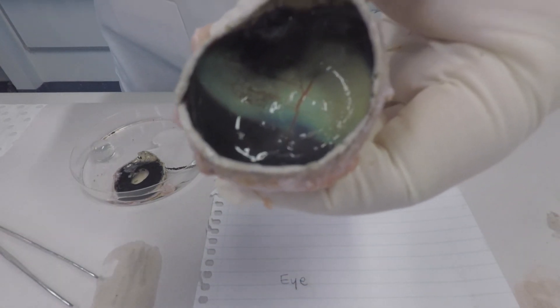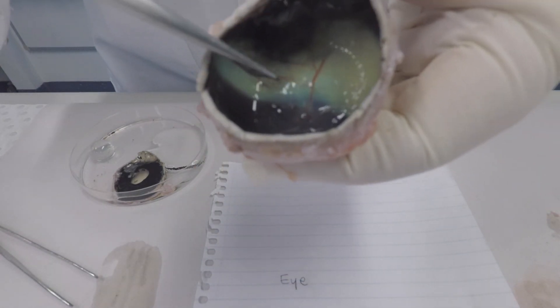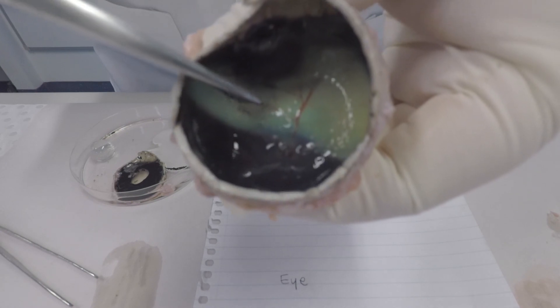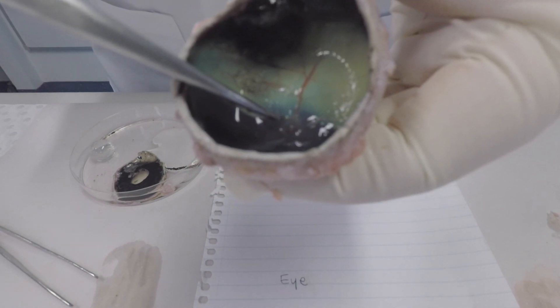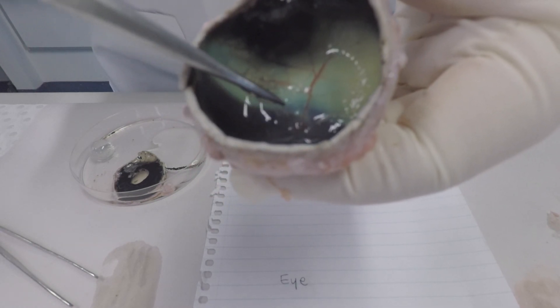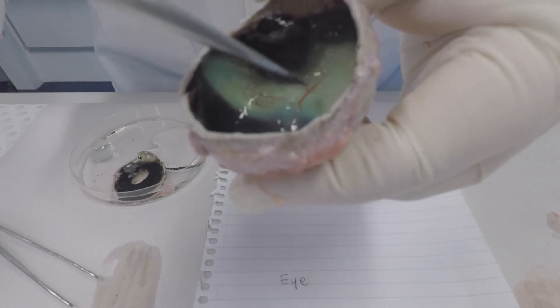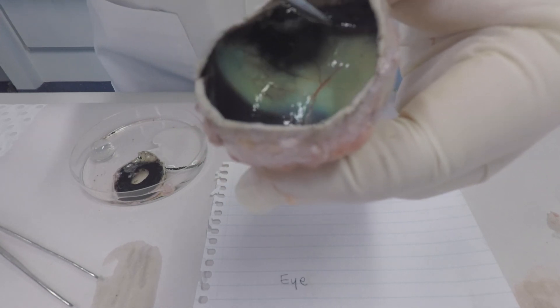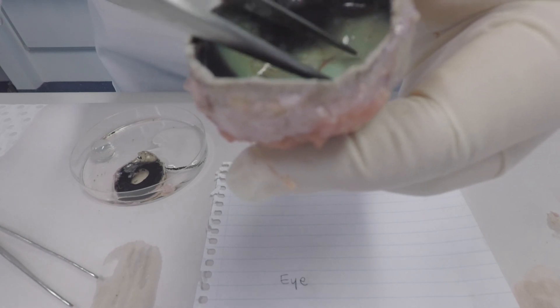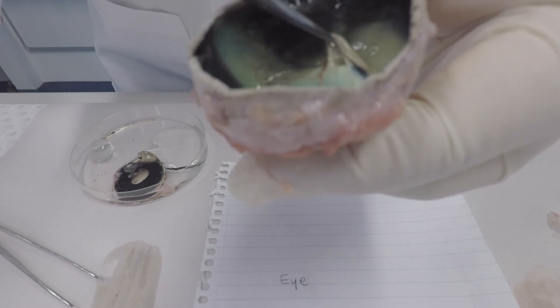We'll just have a quick look at the back of the eye. We've got the sclera, and then we've got the choroid, which is the bright green-aqua colored layer. We also have the retina, and we can see on top of that. I'll just take a bit apart and show you—there it is.